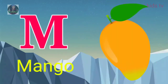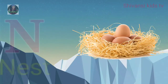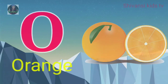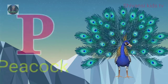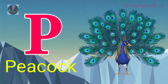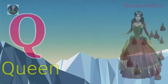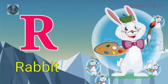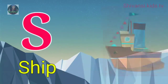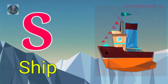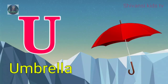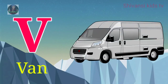M for mango, N for nest, O for orange, P for peacock, Q for queen, R for rabbit, S for sheep, T for tiger, U for umbrella.